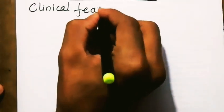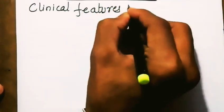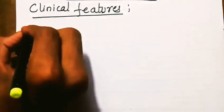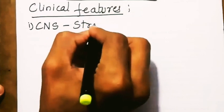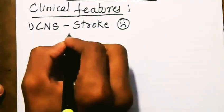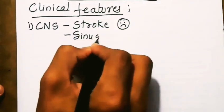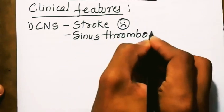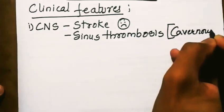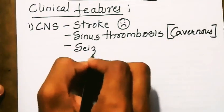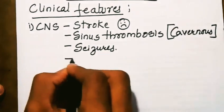Going to clinical features of this syndrome. Firstly, CNS syndromes like stroke, sinus thrombosis especially cavernous sinus thrombosis, then seizures, and chorea.